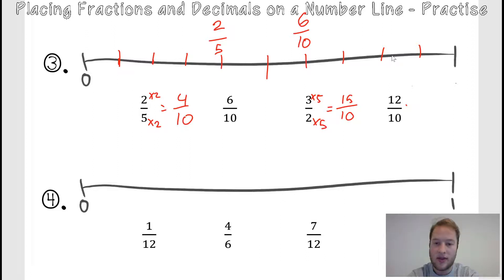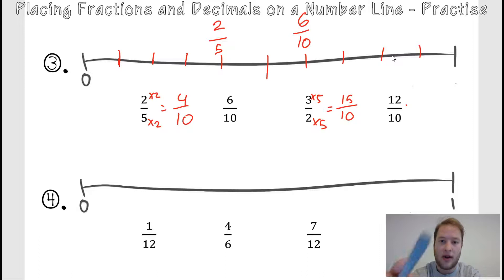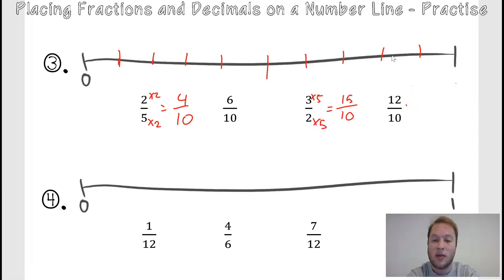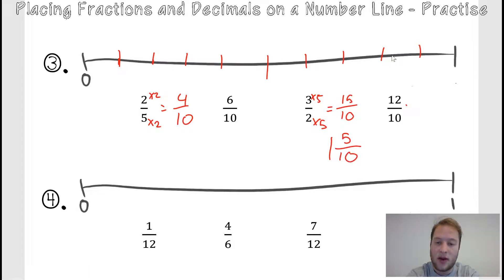Three over two was the same as fifteen over ten — I made a mistake. We've got a number that is what we call an improper fraction. We've got two improper fractions here. When we have an improper fraction, we need to convert it into proper. Proper just means the top number is smaller than the bottom number. To do that: how many tens go into fifteen? It goes in one time with five left over to get to fifteen. So it's one and five tenths.